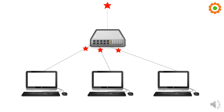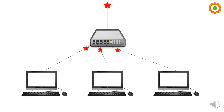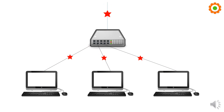Suppose my data packet belongs to only one particular computer, but the hub will broadcast it and send it to all computers. This creates a security concern. The hub also duplicates packets, creating unwanted traffic on the network, which makes it congested and slow. However, a hub may be useful if you specifically want to broadcast data to all connected nodes.